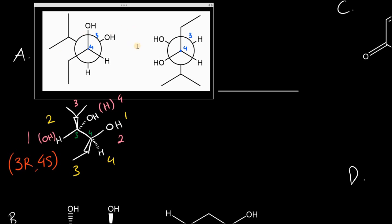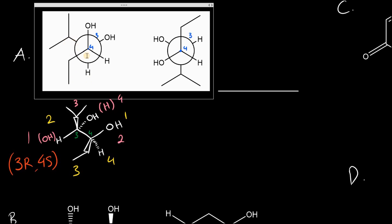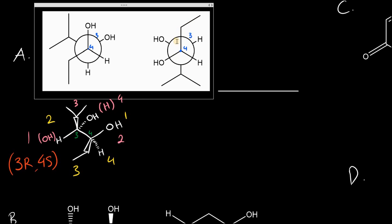Comparing the two Newman projections, the one on the left is not in the most stable conformation because the two largest groups are both on wedges, creating significant steric repulsion — that's why the compound looks the way it does when translated into a line angle structure. In the second Newman projection the largest groups are gauche to one another, so it should be a bit easier to draw out.